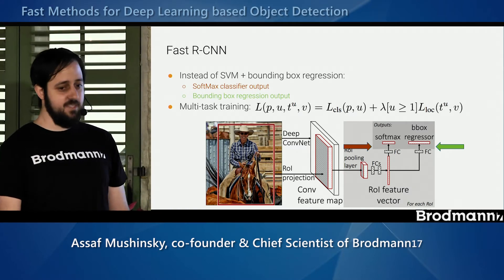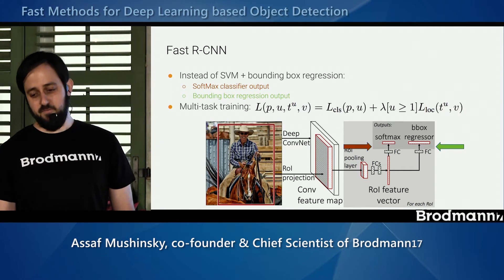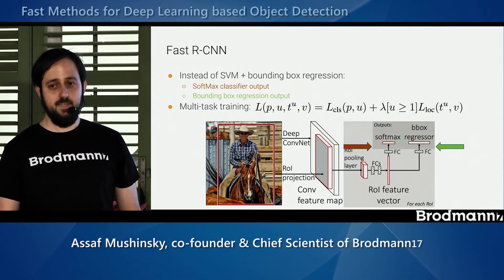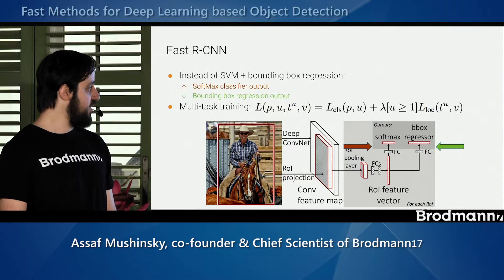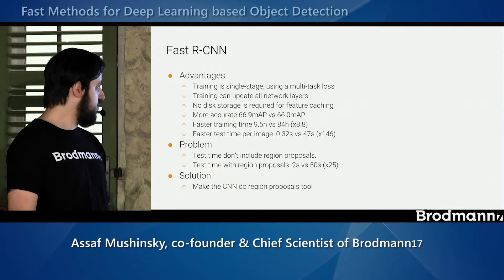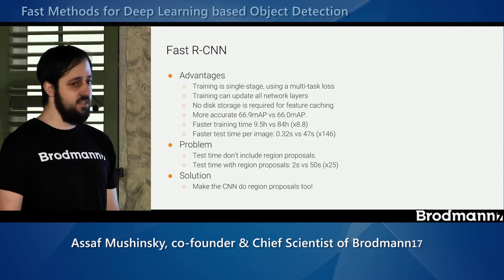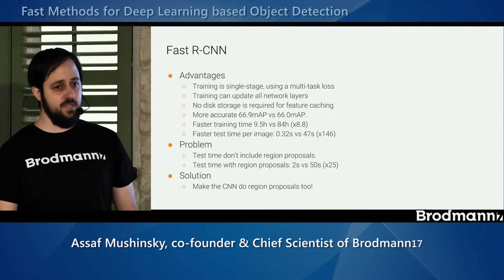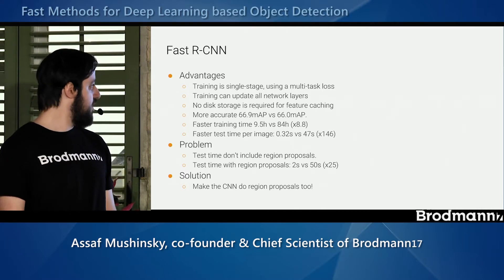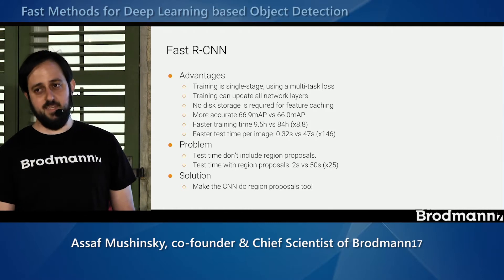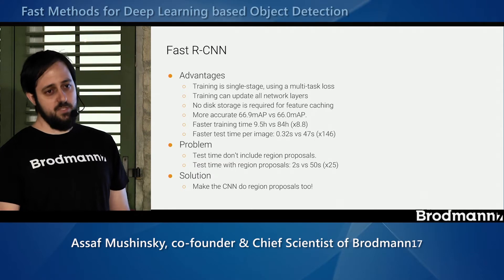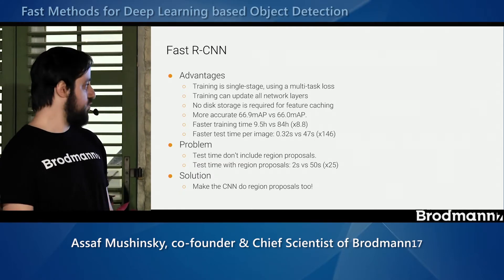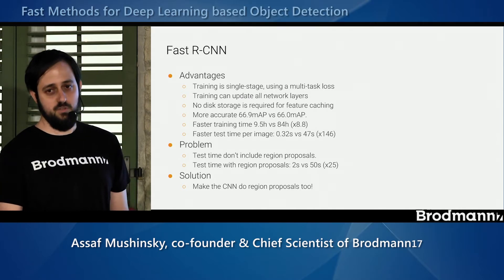The second improvement is that we can train the entire model together, instead of separately fitting feature extraction, then SVM for each class, then bounding box regression for each class. We do all classes and all tasks together. This method is better in almost every way — we train quickly with fewer resources and get better accuracy. Inference time went from 47 seconds per image to 0.32 seconds, though this doesn't include proposals. Including proposals running on CPU, it's actually two seconds — still impressive compared to the 50 seconds before.